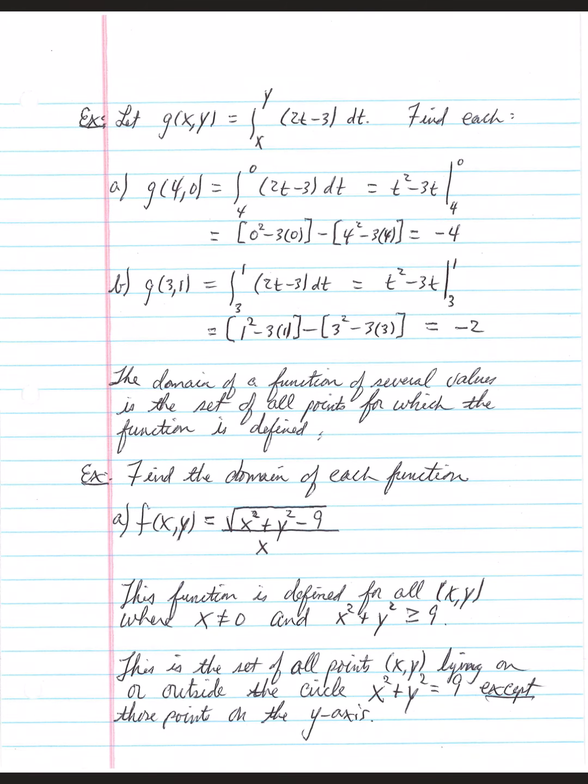Same antiderivative of t squared minus 3t. Remember to evaluate at 1 and then also at 3. Substituting 1 into the antiderivative minus substituting 3 into the antiderivative. That gives us negative 2 minus 0, so that's negative 2.